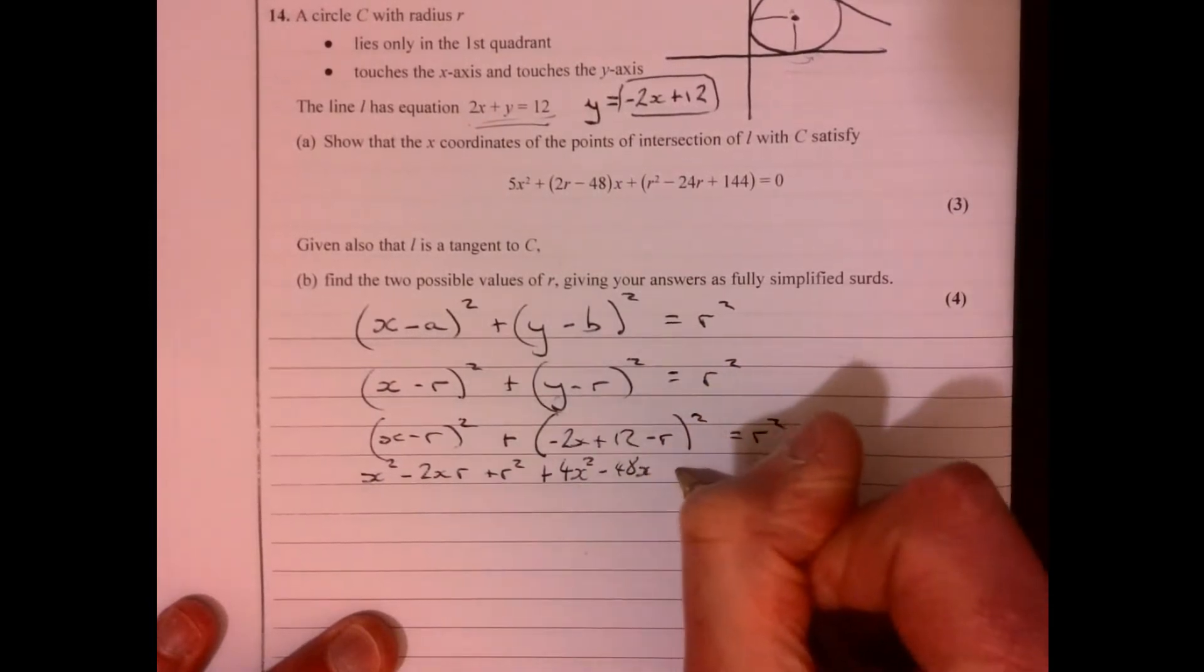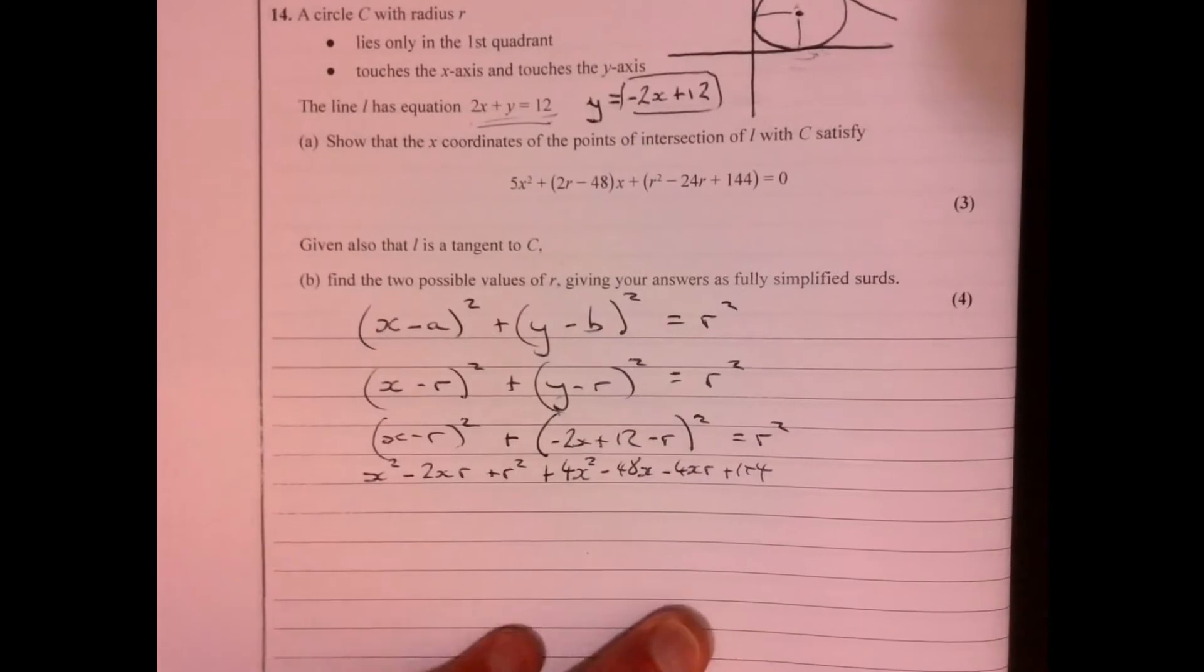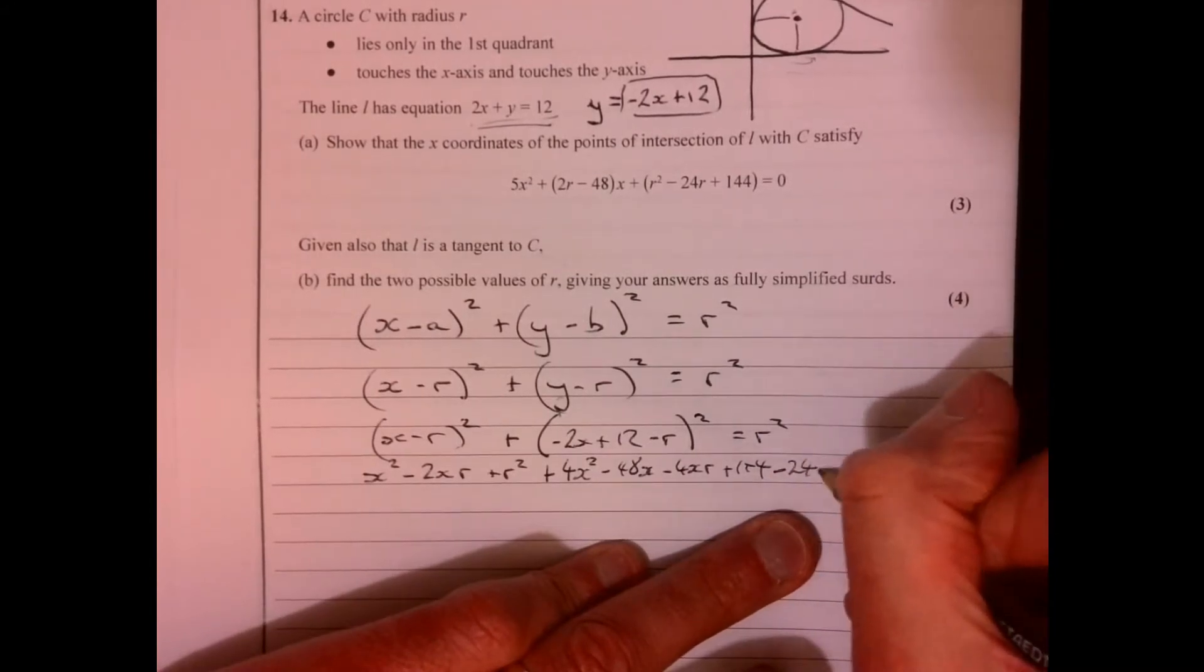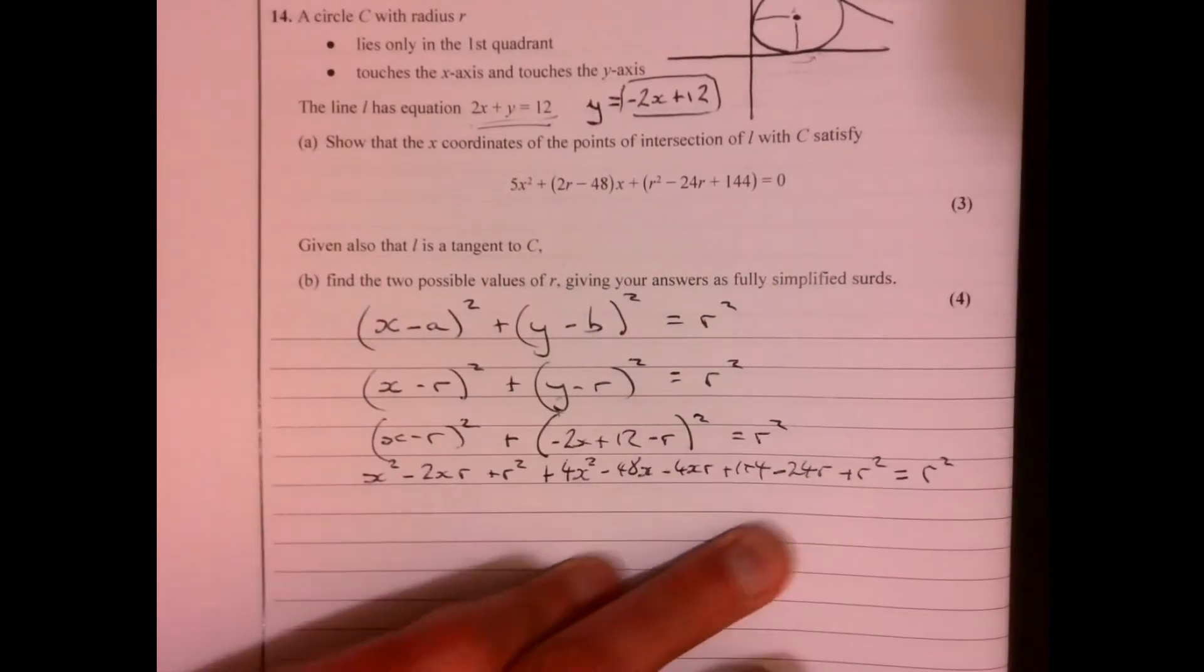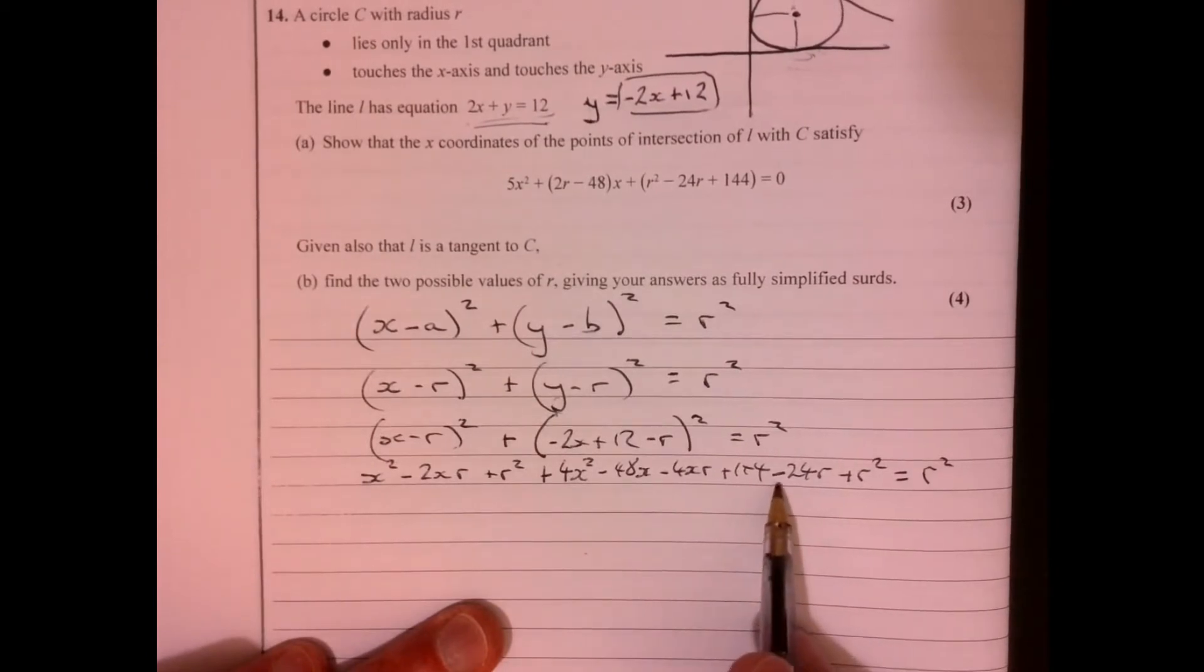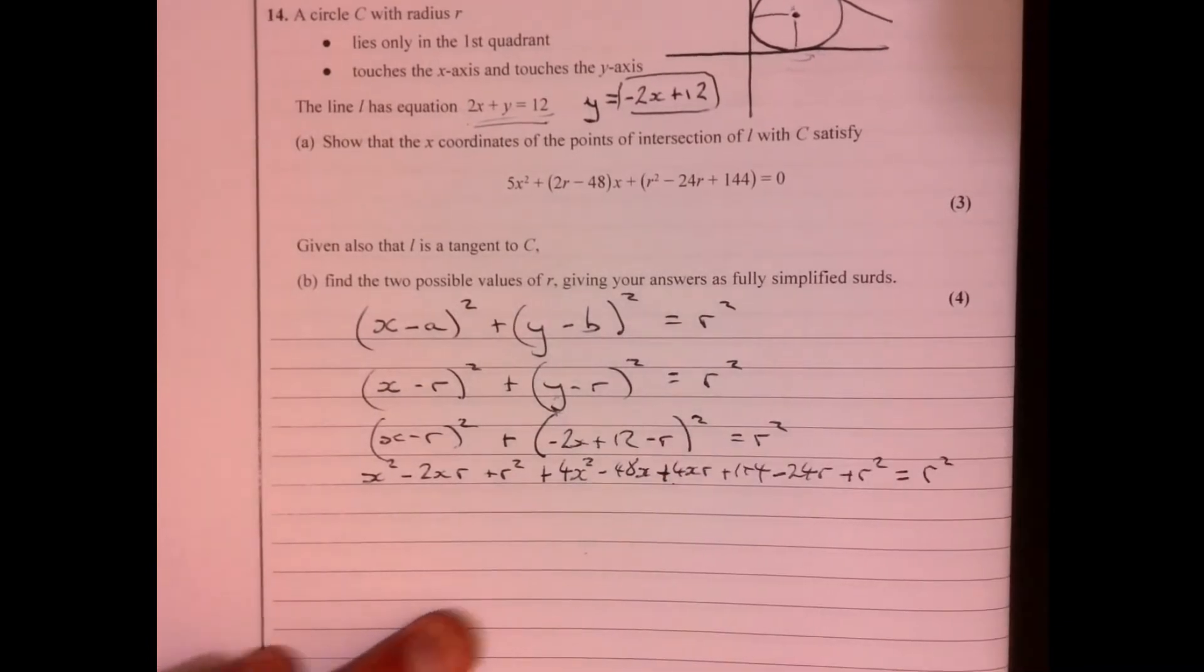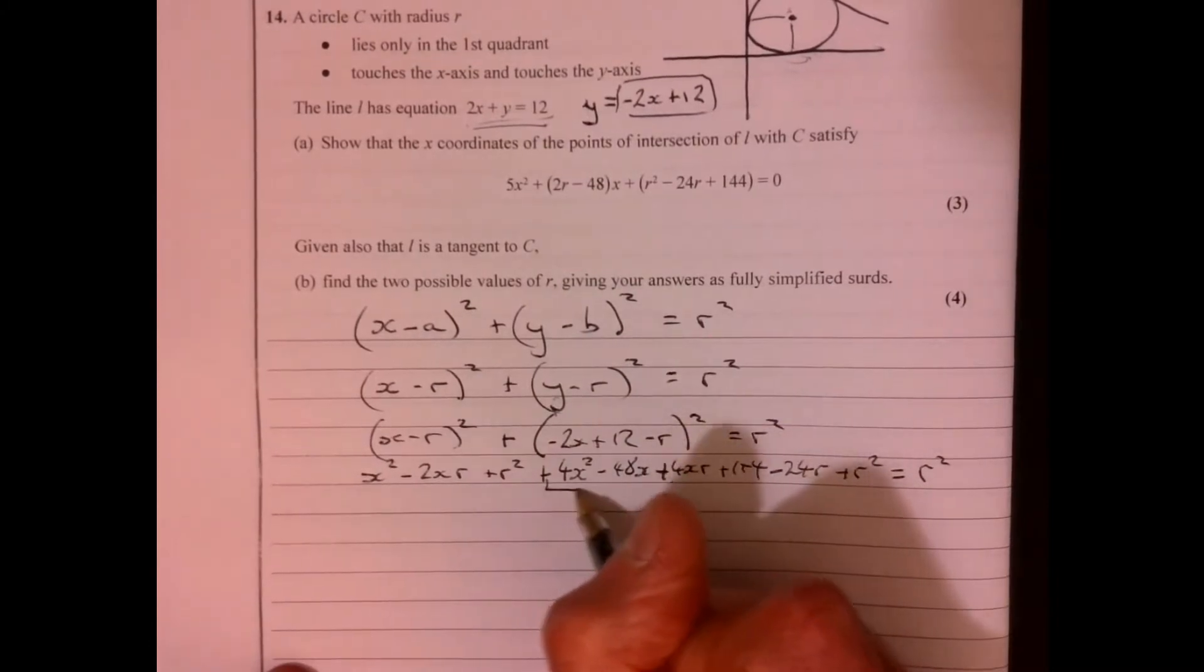So if you multiply that out, it's going to give you 4x² - 48x - 4xr + 144 - 24r + r², and then that equals the whole lot equals r². Okay so, oh this bit, nearly made a mistake there look, that should be, that's actually going to be plus 4xr.